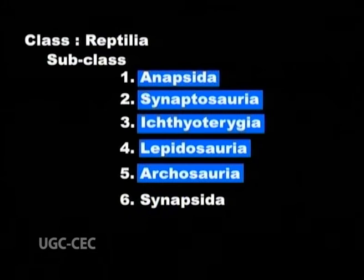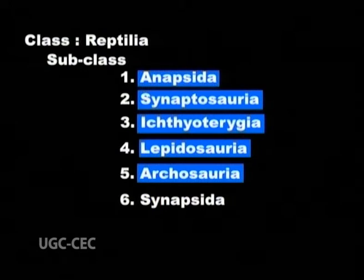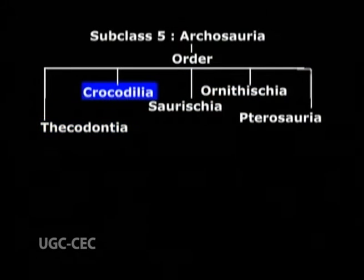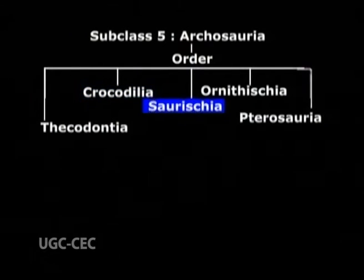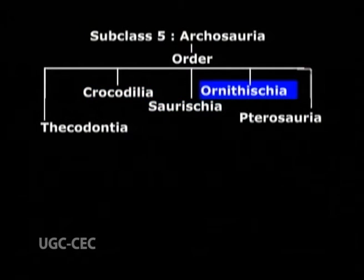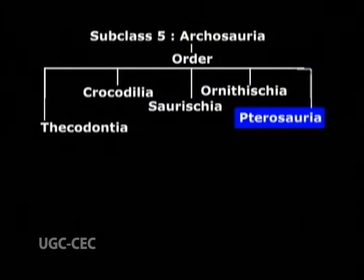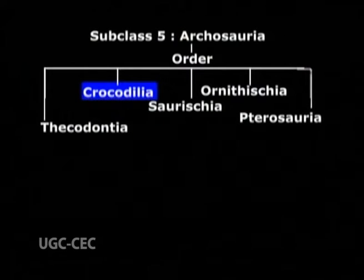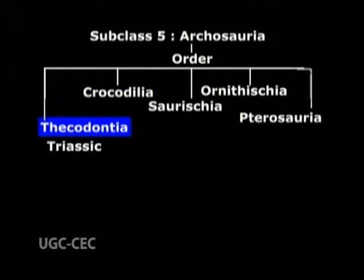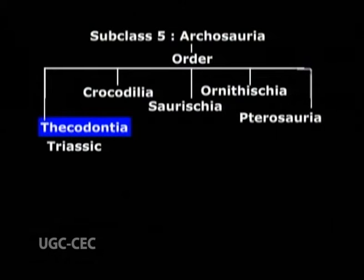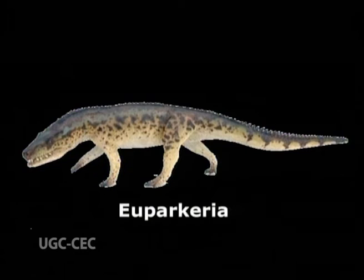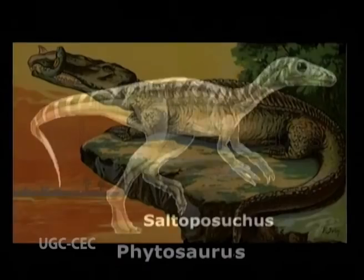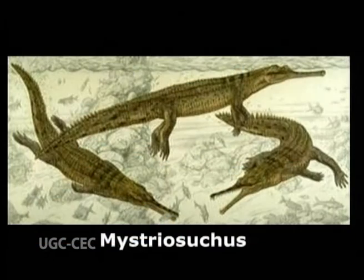Subclass 5, Archosauria, is classified into five orders: Thecodontia, Crocodilia, Saurischia, Ornithischia, and Pterosauria. Except Crocodilia, all others are extinct. Order 1, Thecodontia, existed in Triassic. Examples are Euparkeria, Saltoposuchus, Phytosaurus, and Mystriosuchus.